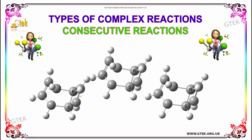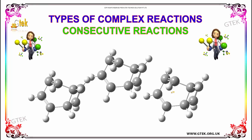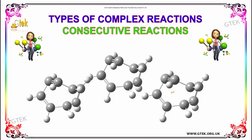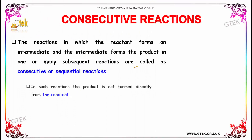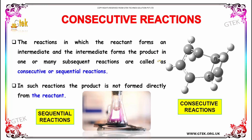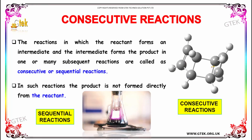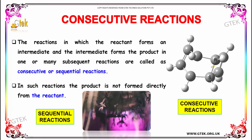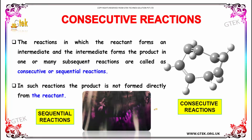Let's move on to the consecutive reaction. The reaction in which the reactant forms an intermediate, and the intermediate forms the product in one or more subsequent reactions, are called consecutive or sequential reactions. In such reactions, the product is not formed directly from the reactant.